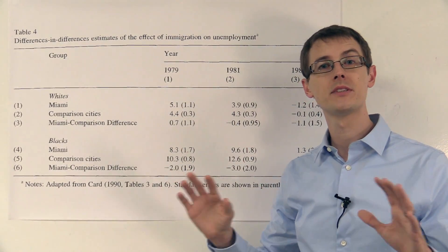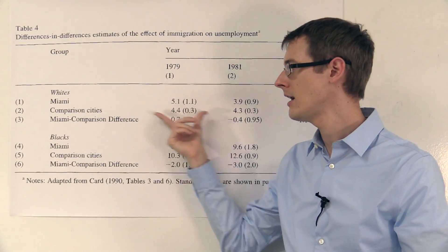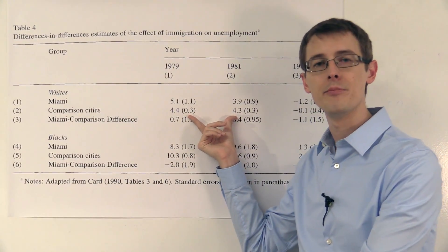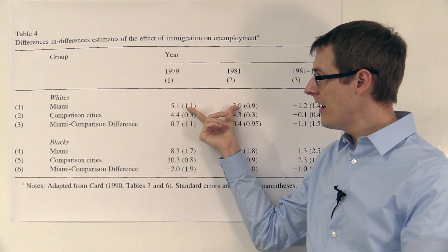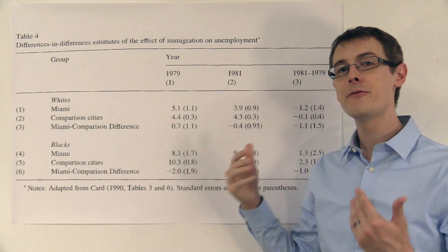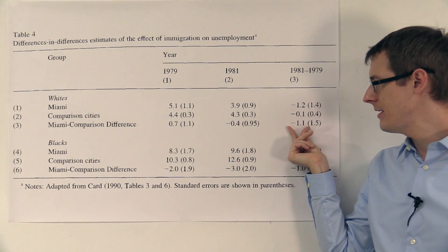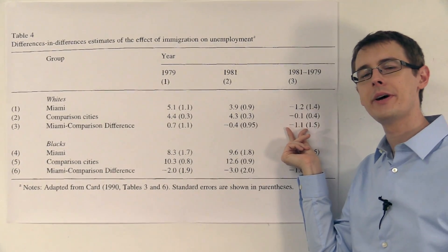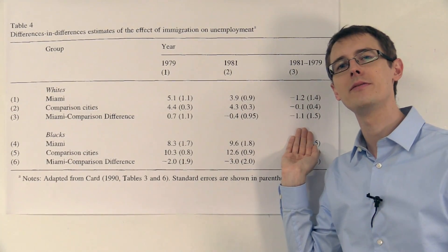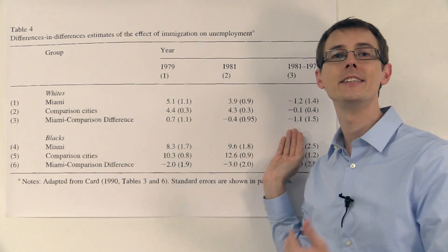Pretty much the immigration rate was the same. So the only thing that's changing over time in the comparison cities is whatever the overall trend is. So here we see that the overall trend is going down by 0.1%. But in Miami, it was going down by a lot more, by 1.2%. So our difference in difference estimate takes this common trend out of the trend in Miami, and we're left with a downward trend of 1.1%. So this is our difference in difference estimate of the causal effect of immigration on the unemployment rate for whites. It's a 1.1% decrease.